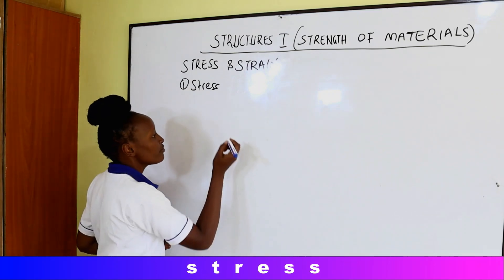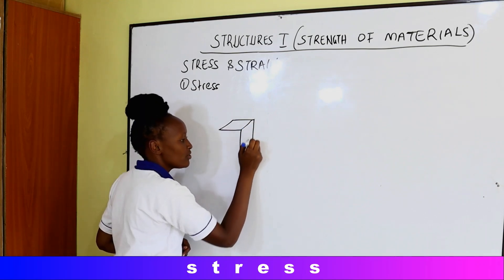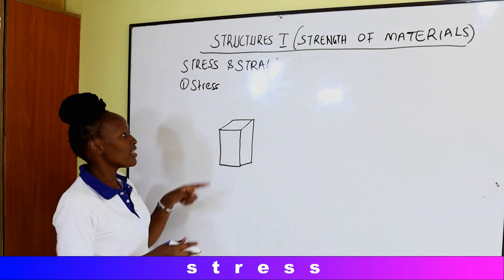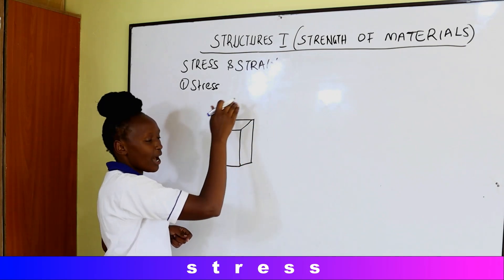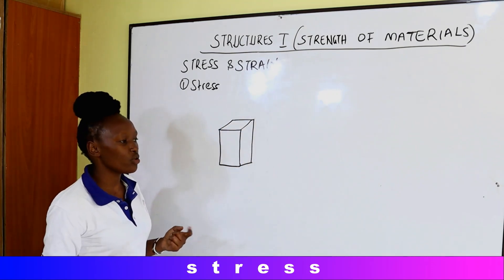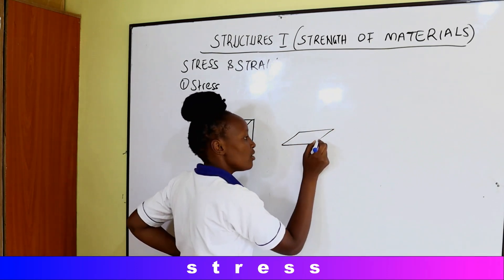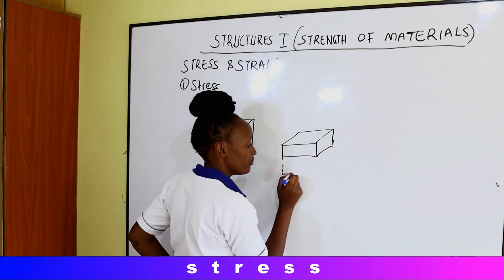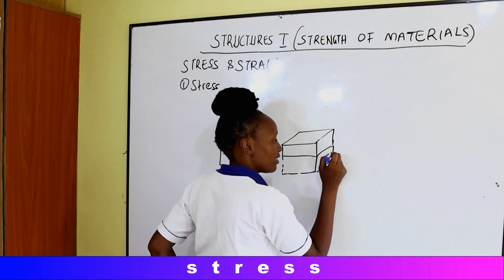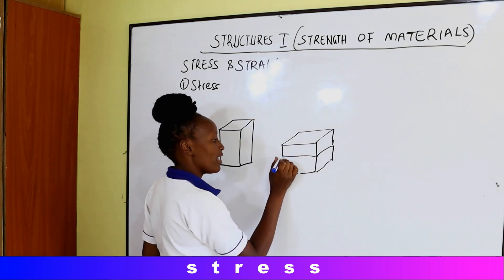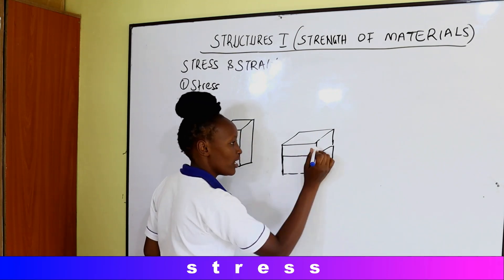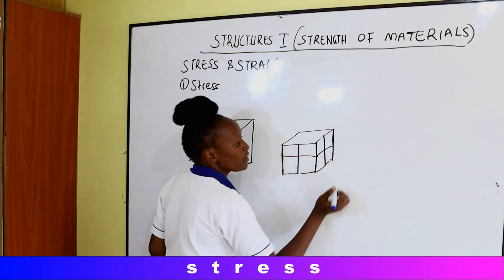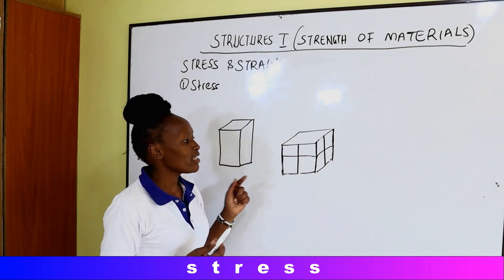Whenever we have a body — for example, a column in buildings — we have a rectangular column here. Whenever we have this column, it usually carries the load above. For example, in a storey building, we have floors stacked up. The columns are situated at intervals throughout the building. These columns usually carry the load downwards.